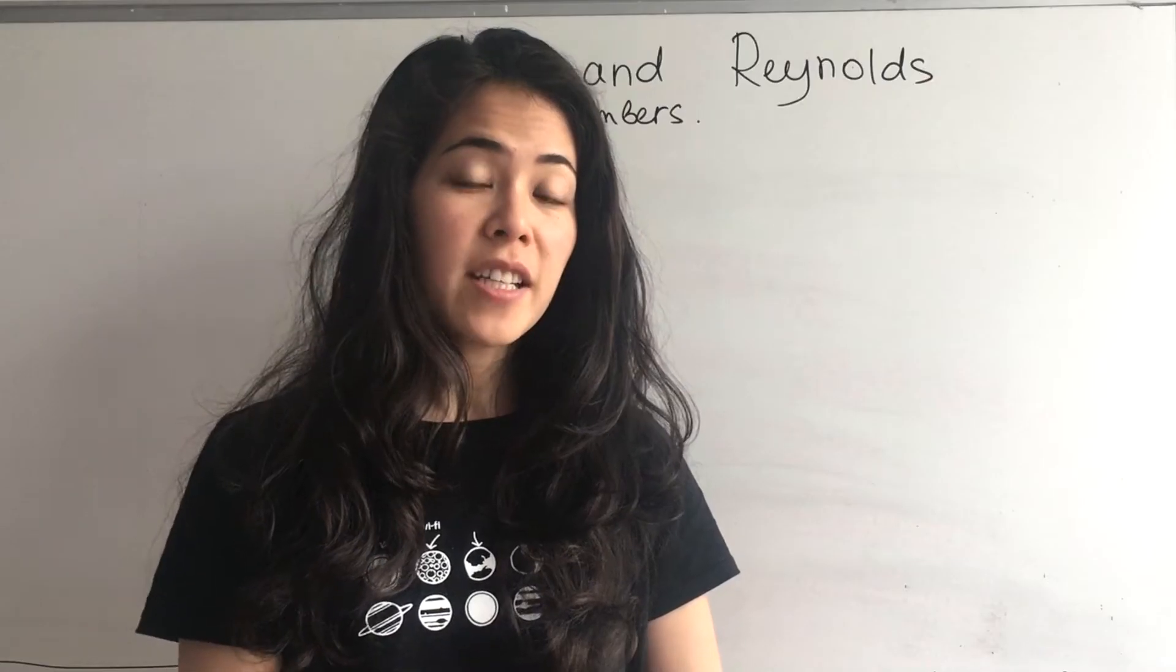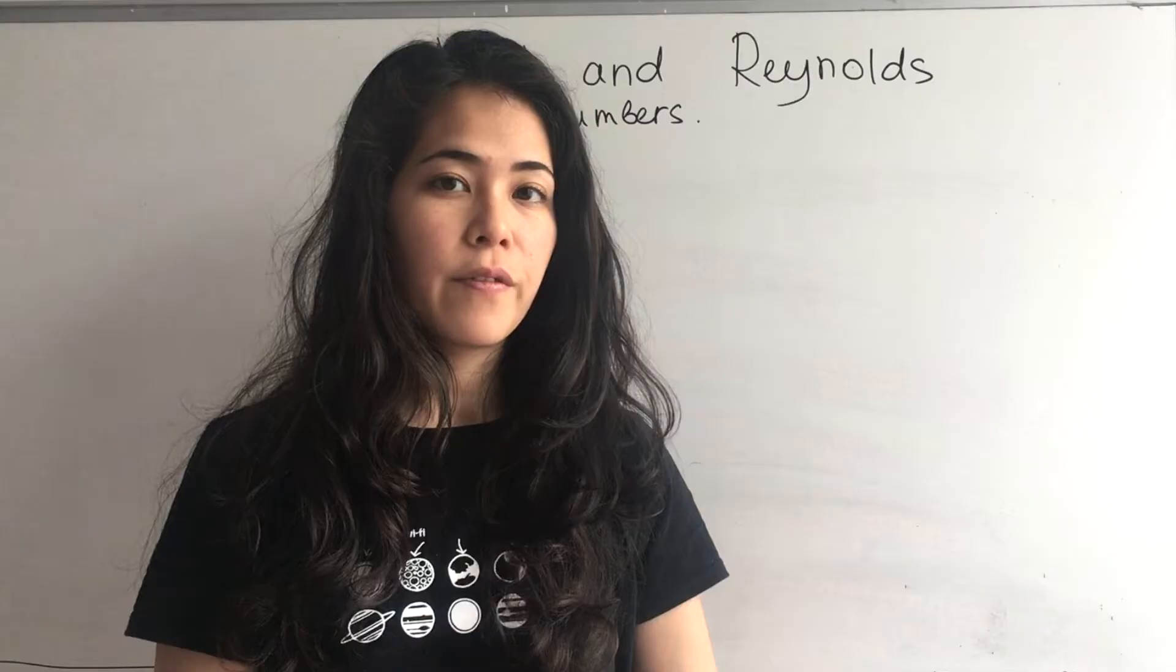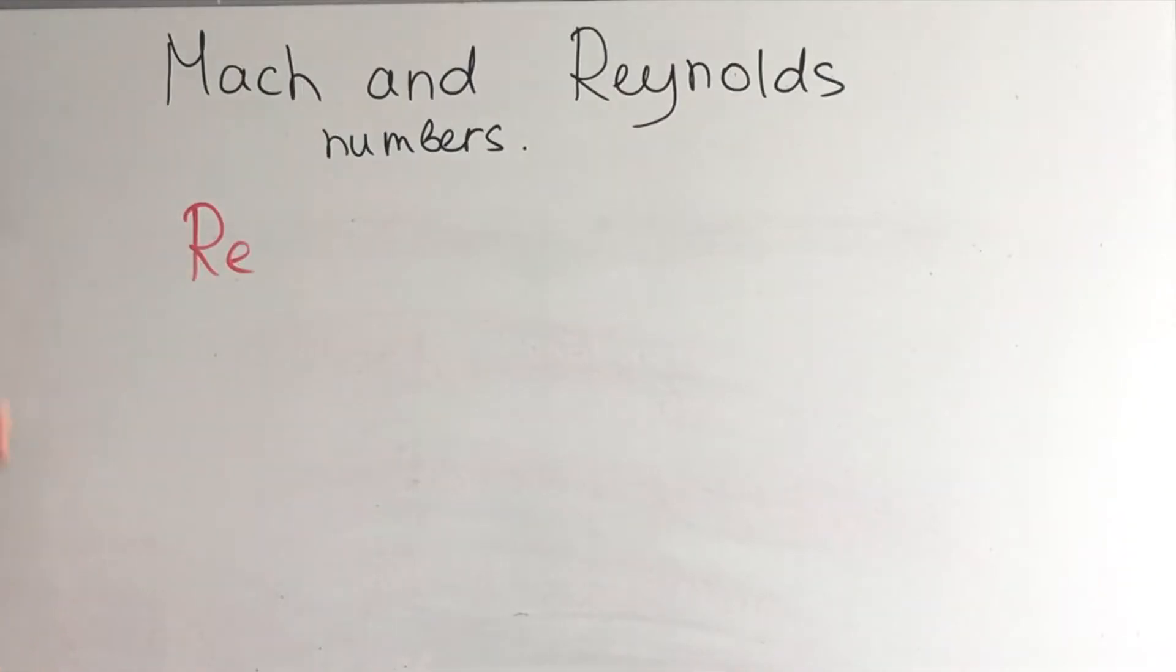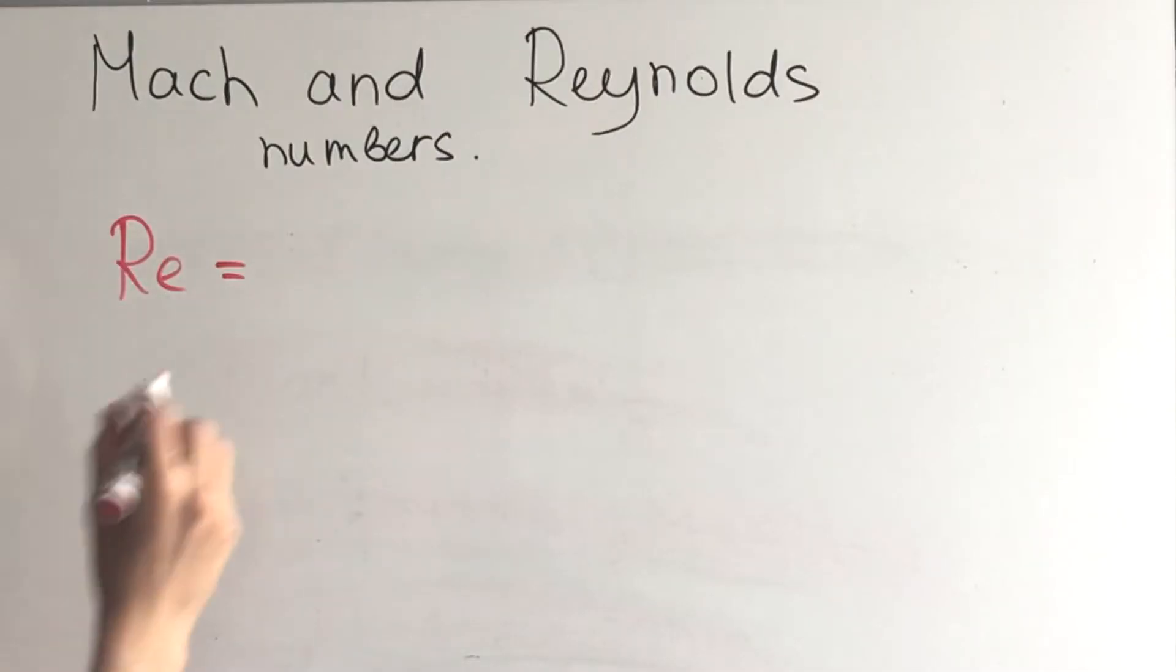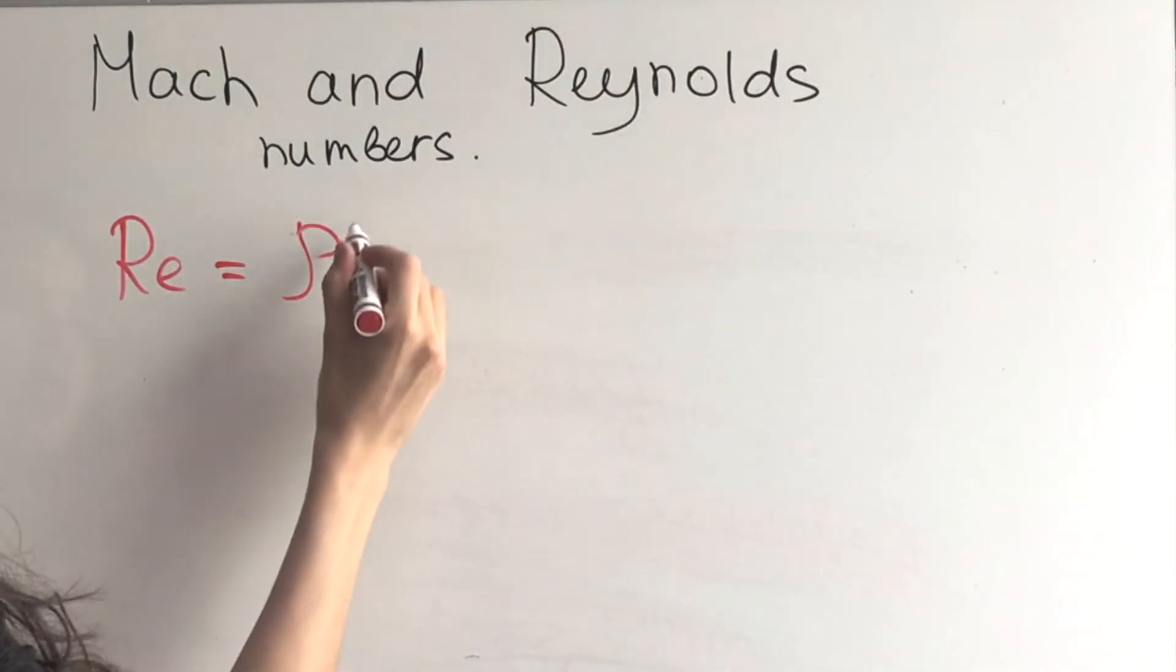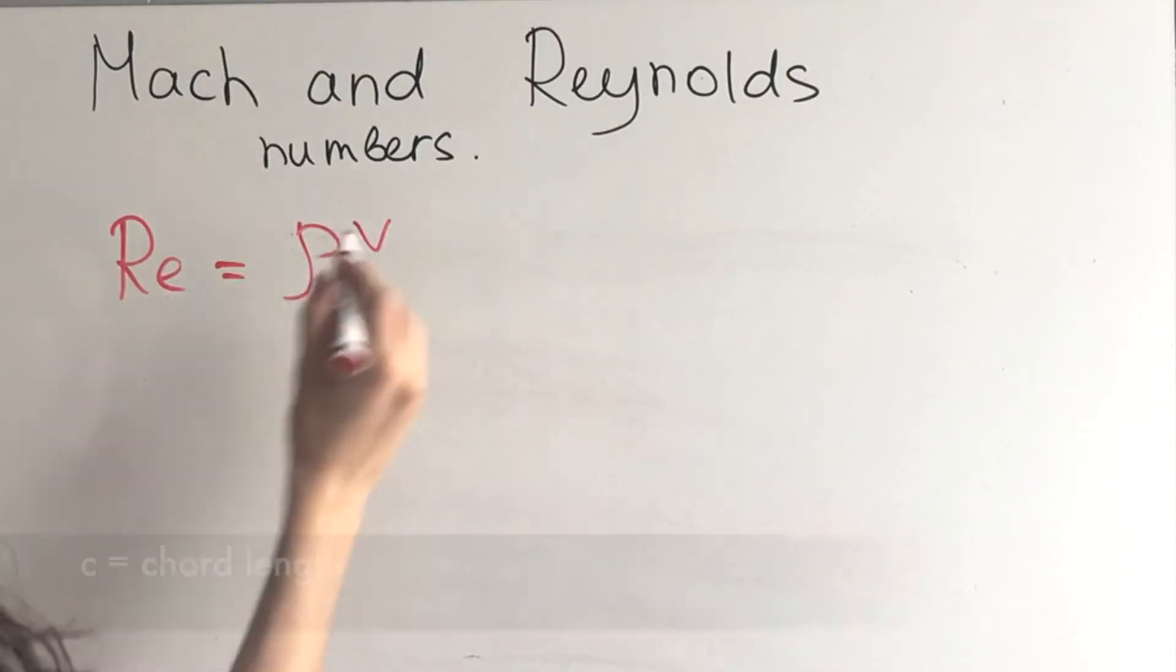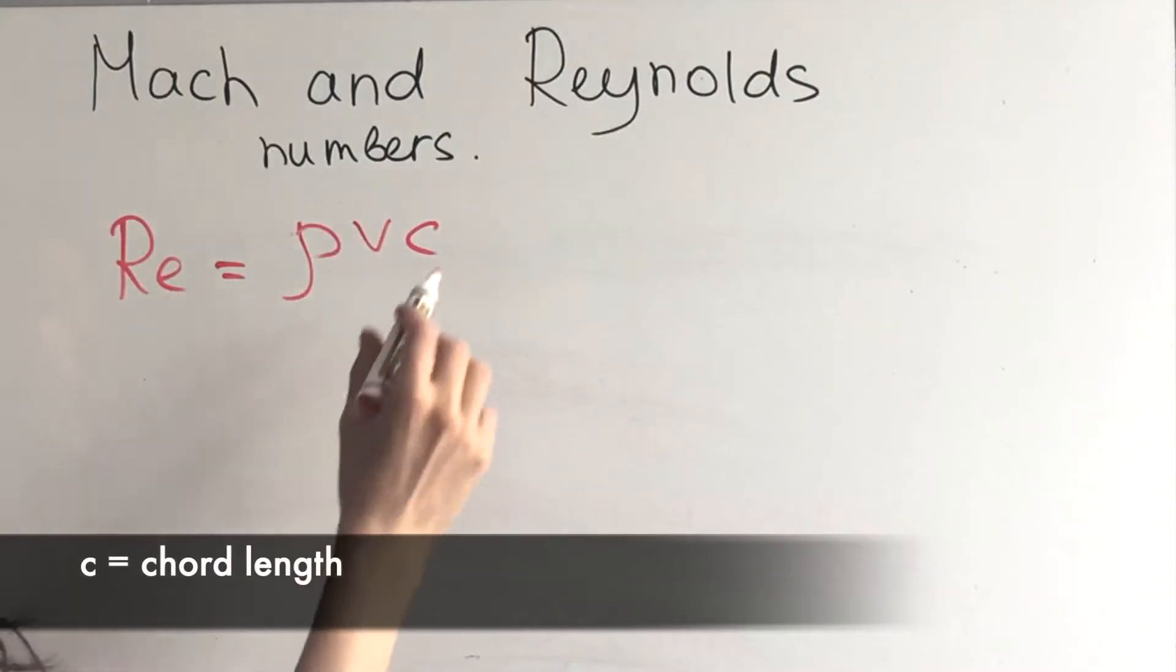Reynolds number describes the viscosity of the flow. Reynolds number is denoted by Re and it's also a unitless or dimensionless number. It's equal to density of air multiplied by the velocity of the flow multiplied by the chord.